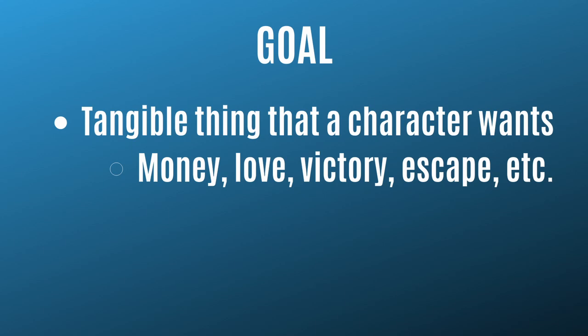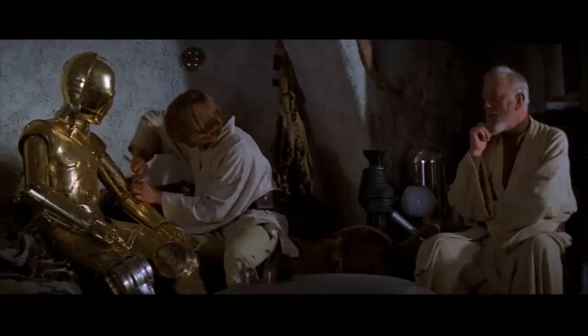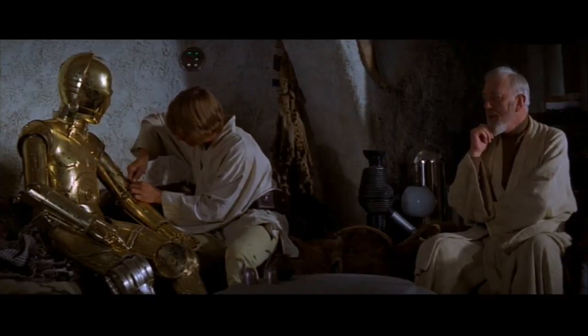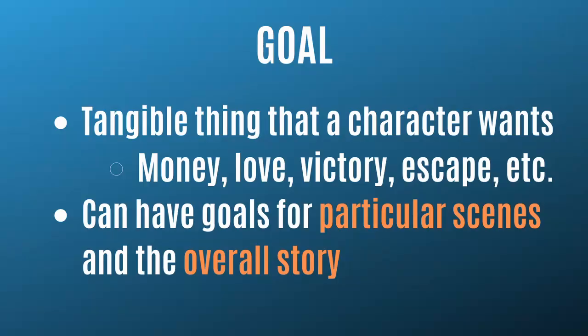A character can have a goal for a particular scene that differs from their goal for the overall story. For example, in Star Wars, Luke has many different scene goals: he wants to convince his uncle to let him attend the academy, he wants to deliver the droids to Obi-Wan, he wants to locate the princess. But his overall goal in the original movie is to deliver the data tapes to the Rebel Alliance.